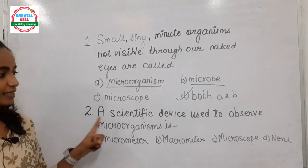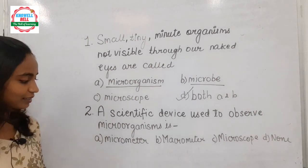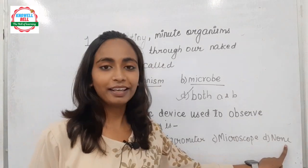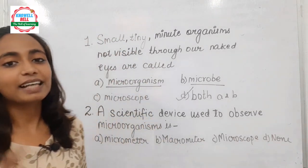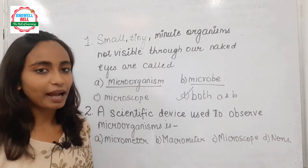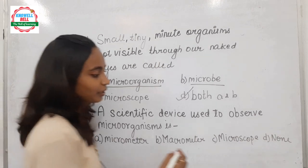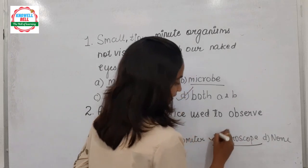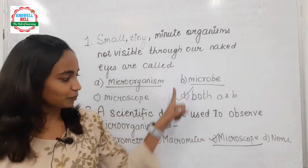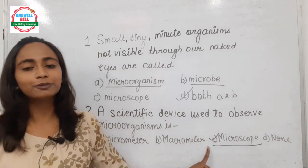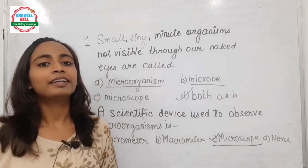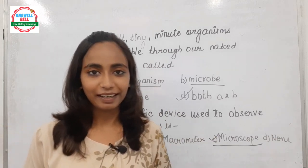Question 2: a scientific device used to observe microorganisms is — micrometer, macrometer, microscope, or none. We have studied that a scientific device used to observe and magnify microorganisms is microscope. So the right answer is Option C. You can match your answers — if your answers are similar to these, you have understood this topic with good detail and better understanding.